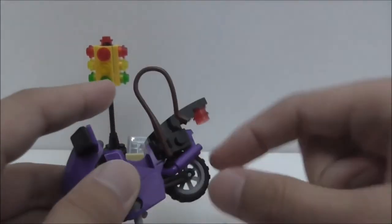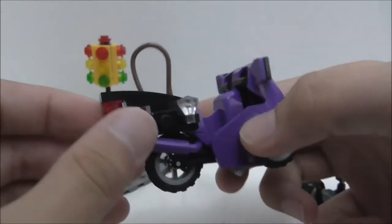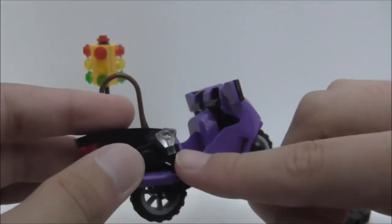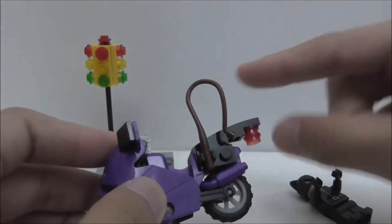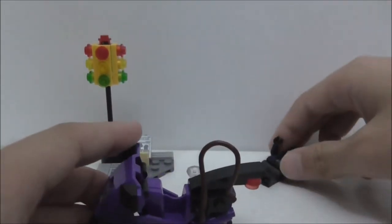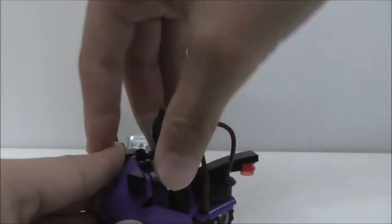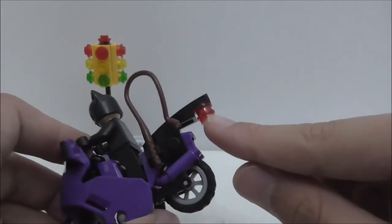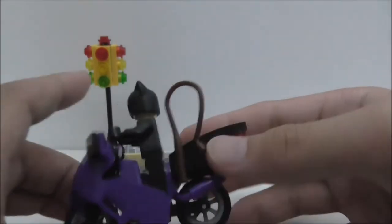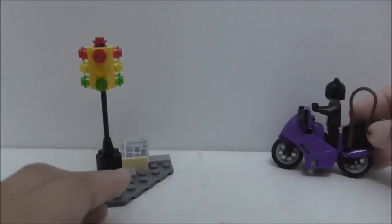You can just put in Catwoman here. You got these clip pieces on the side to clip on to her accessories. So you got the diamond that she stole and also this whip piece, the Catwoman whip piece. On the back here, you just got a tail light represented by two studs. It's a really simple build.